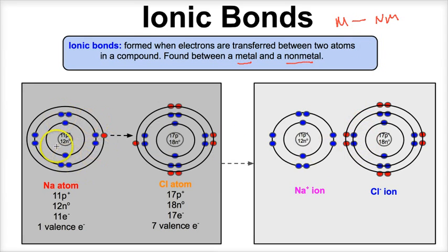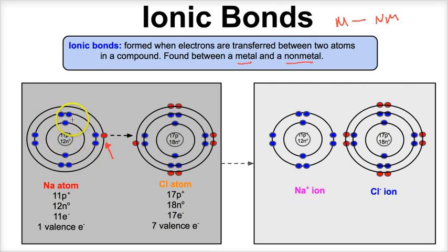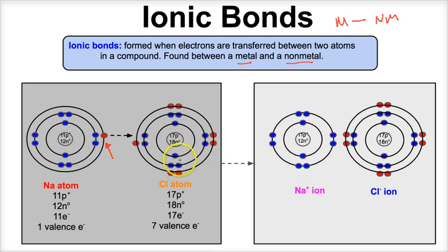Whenever you have a chemical bond between a metal and a nonmetal, it will always be an ionic bond. So here we have a sodium atom with a total of 11 electrons and one valence electron in the outermost energy level. It wants eight — it wants to satisfy its octet. Here's a chlorine atom with seven valence electrons. It too wants to have eight.